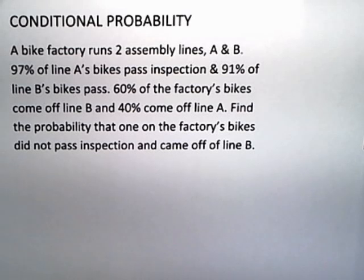A bike factory runs two assembly lines, A and B. 97% of line A's bikes pass inspection, while 91% of line B's bikes pass. 60% of the factory's bikes come off line B, and 40% come off line A. Find the probability that one of the factory's bikes did not pass inspection and came off of line B.